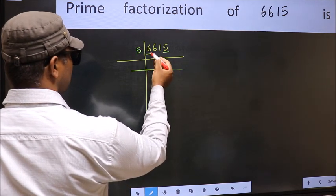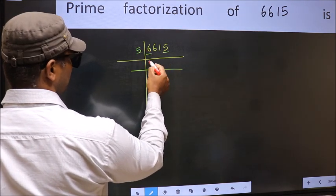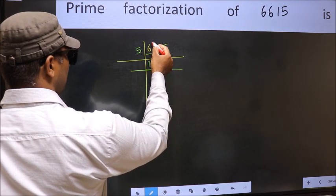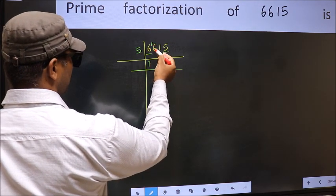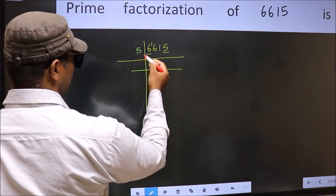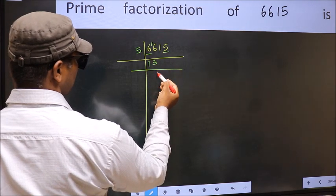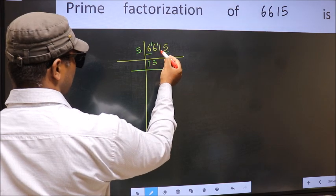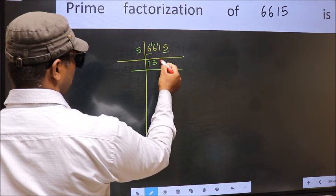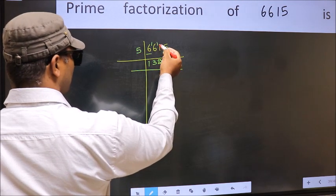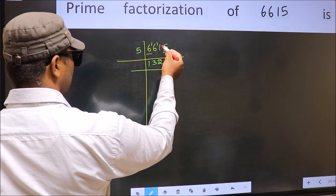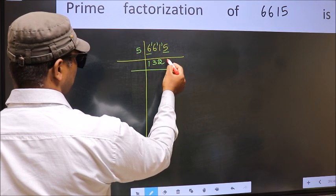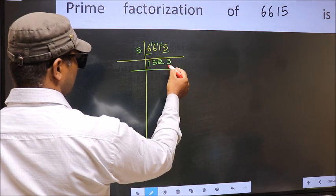First, number 6 — a number close to 6 in the 5 table is 5×1 is 5. 6−5 = 1, carried forward: 16. A number close to 16 in the 5 table is 5×3 is 15. 16−15 = 1, carried forward: 11. A number close to 11 in the 5 table is 5×2 is 10. 11−10 = 1, carried forward: 15. When do we get 15 in the 5 table? 5×3 is 15.